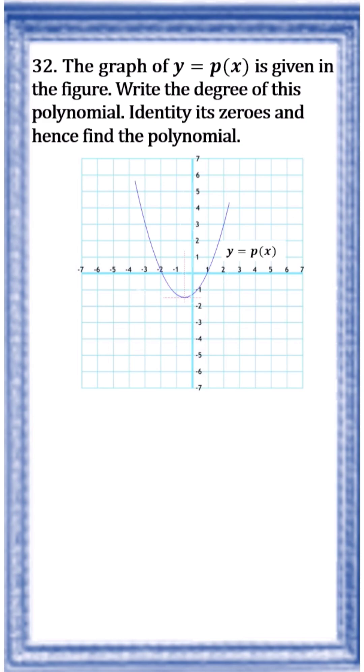The question is: the graph of y equals p of x is given in the figure. Write the degree of this polynomial, identify its zeros, and hence find the polynomial.